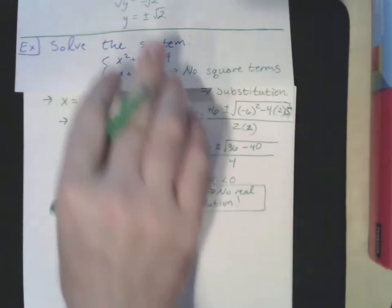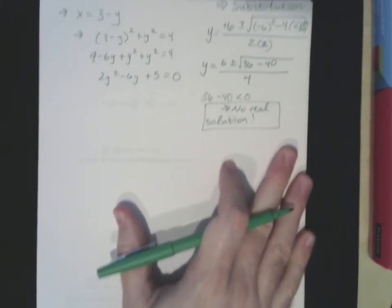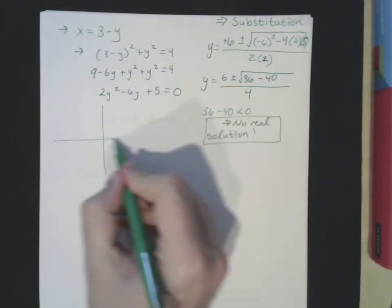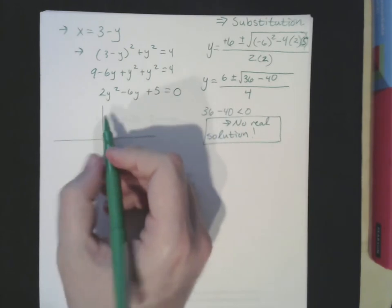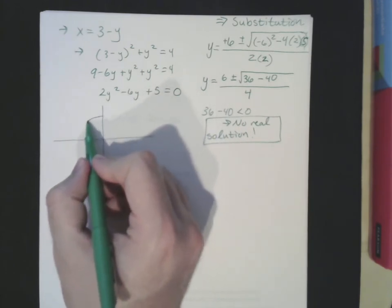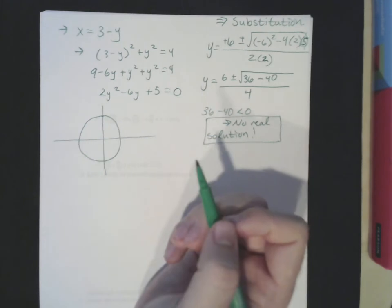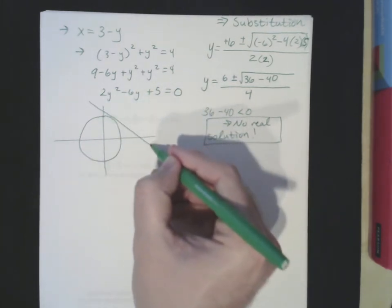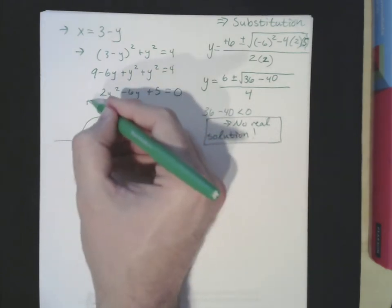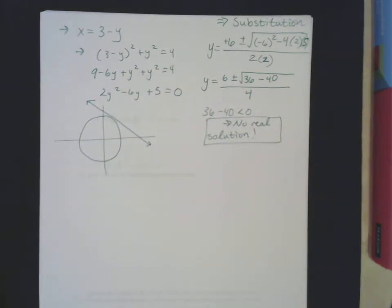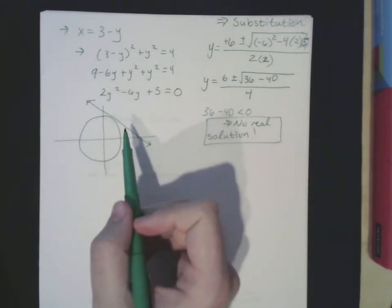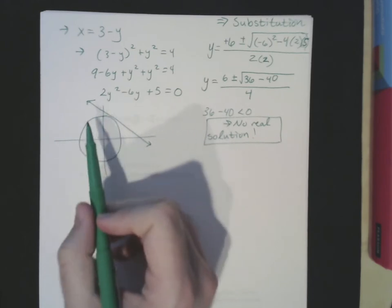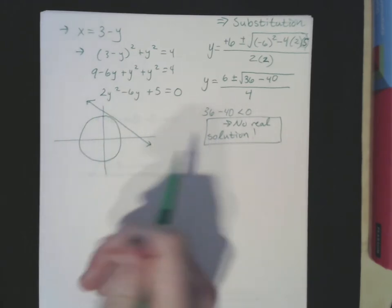Because we have no real solutions, every system of equations must have real solutions. Geometrically, this circle has radius 2 and our line x plus y equals 3 doesn't intersect it. The solutions to systems of equations are intersection points, and this line and circle never intersect — that's why the answer is no real solution.